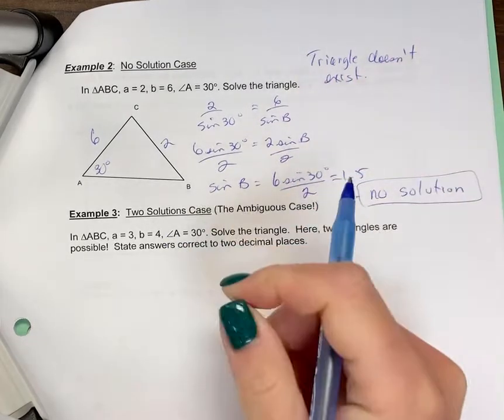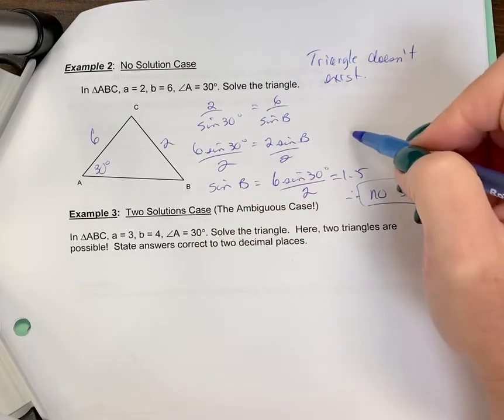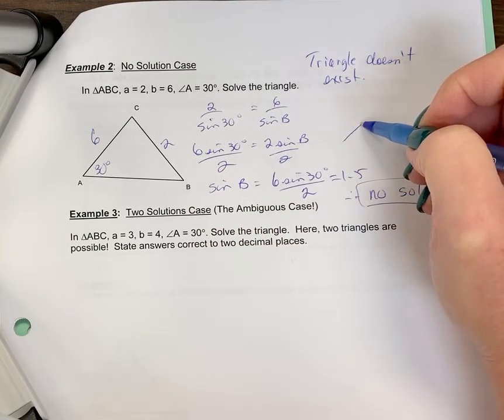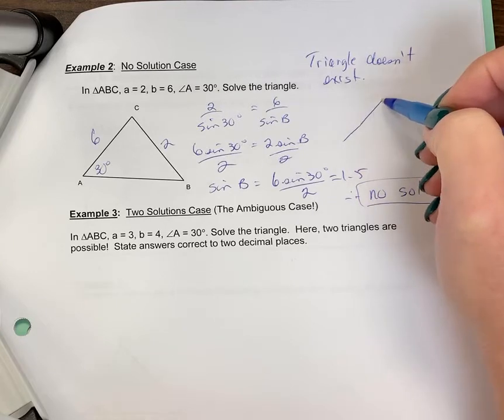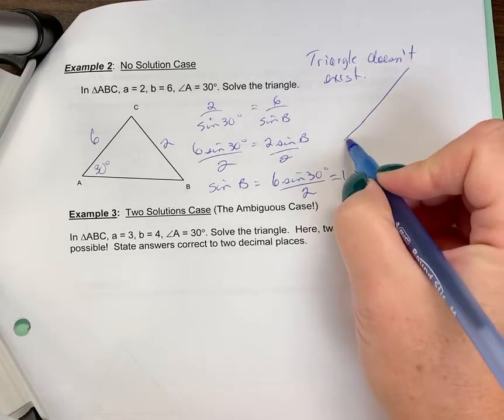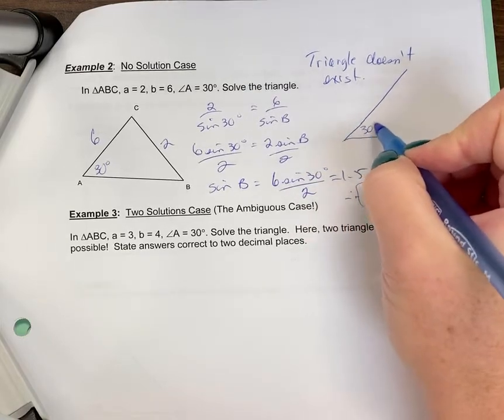So what happens is, if I was to try and draw this a little more to scale, let's say I have 6 here, and I'm going to go like that, say that's sort of 2 sections, 4, 6. I'm kind of just estimating. And I've got an angle of 30 degrees here, approximately.